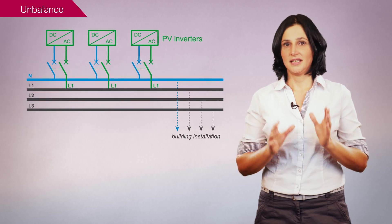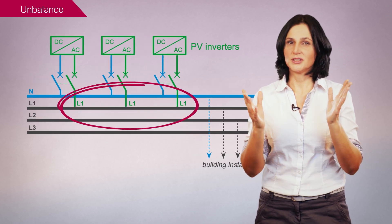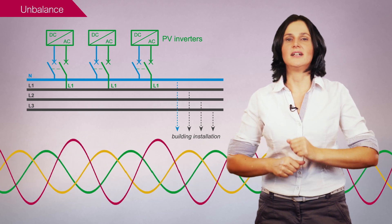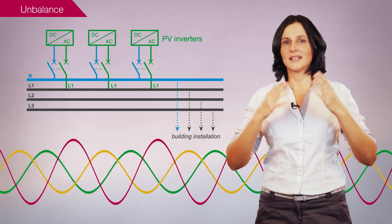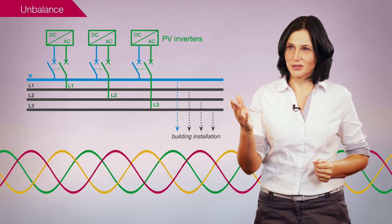A third potential disturbance is unbalance. Unbalance can be generated if single-phase photovoltaic inverters are connected to a three-phase electrical installation. To avoid unbalance, it is recommended to connect the photovoltaic inverters evenly across the three phases as shown here.